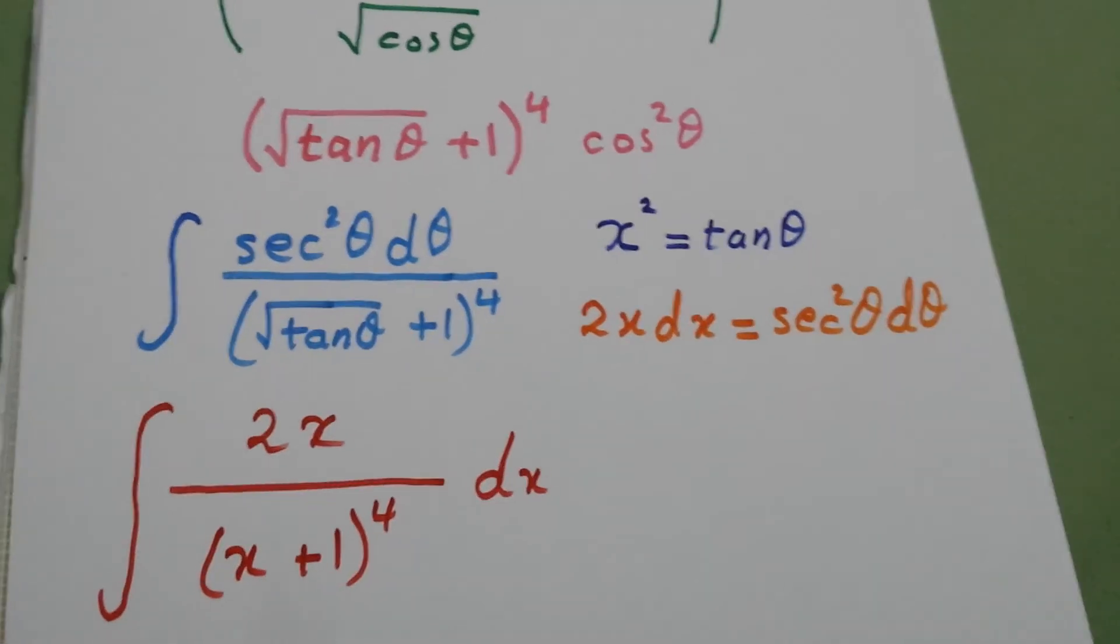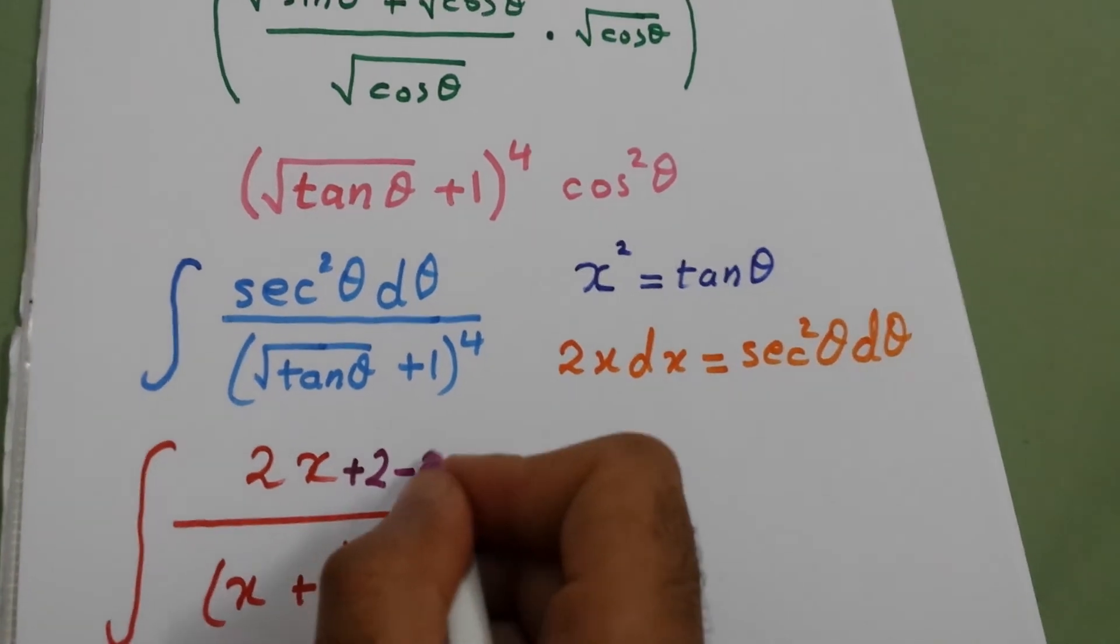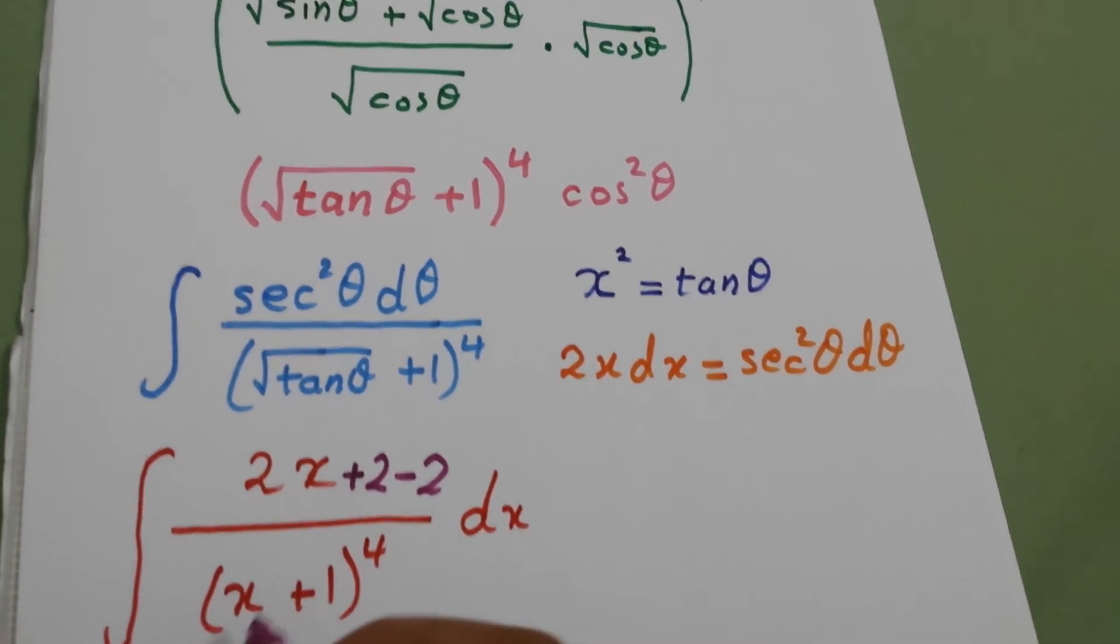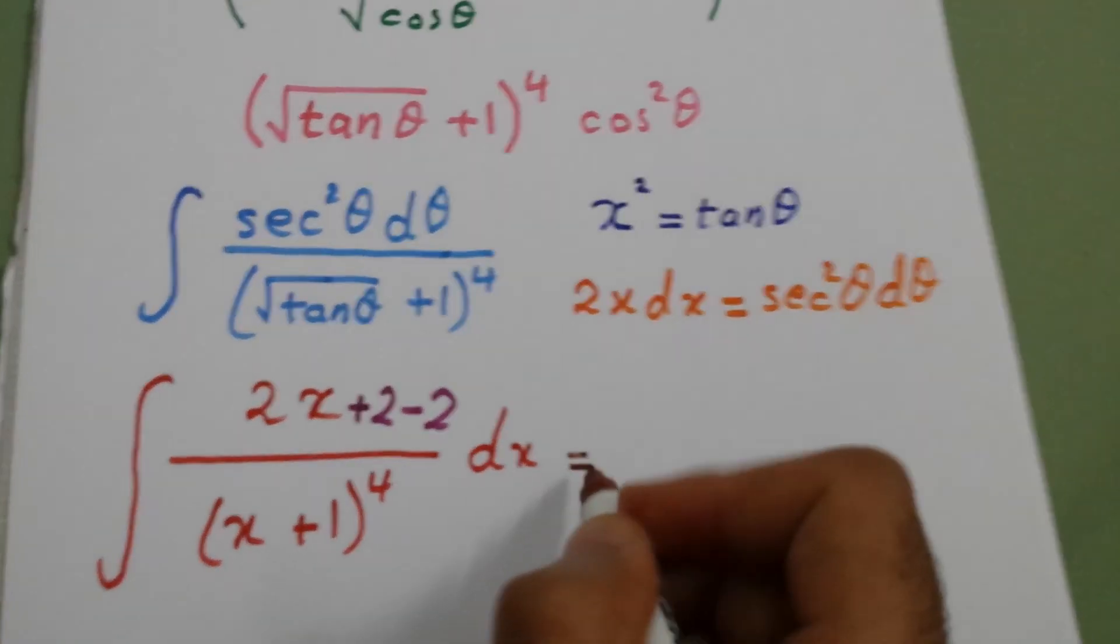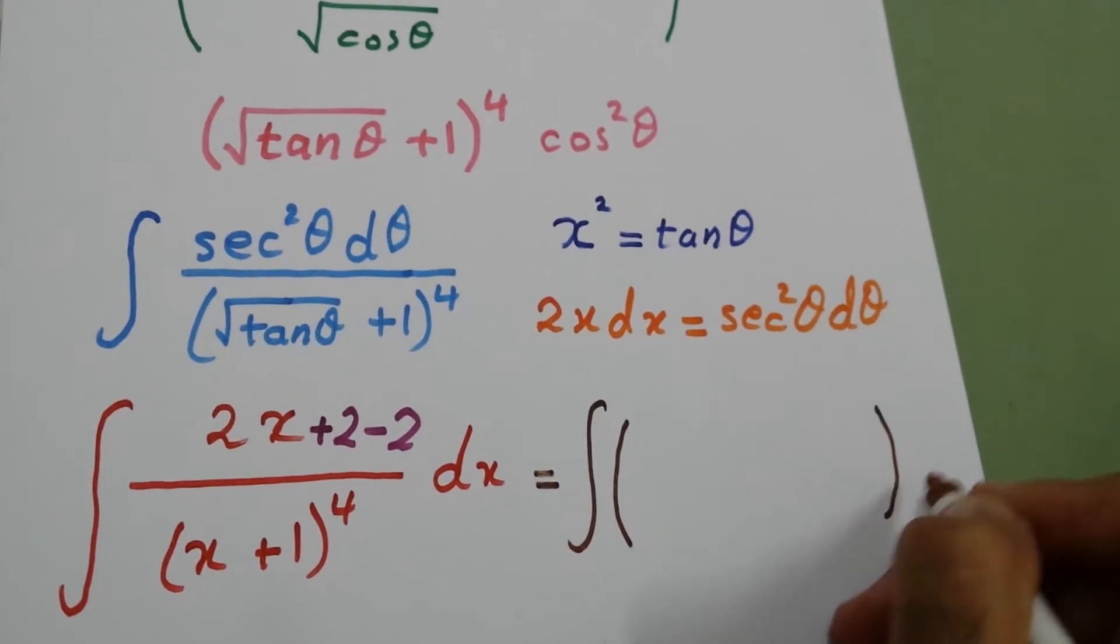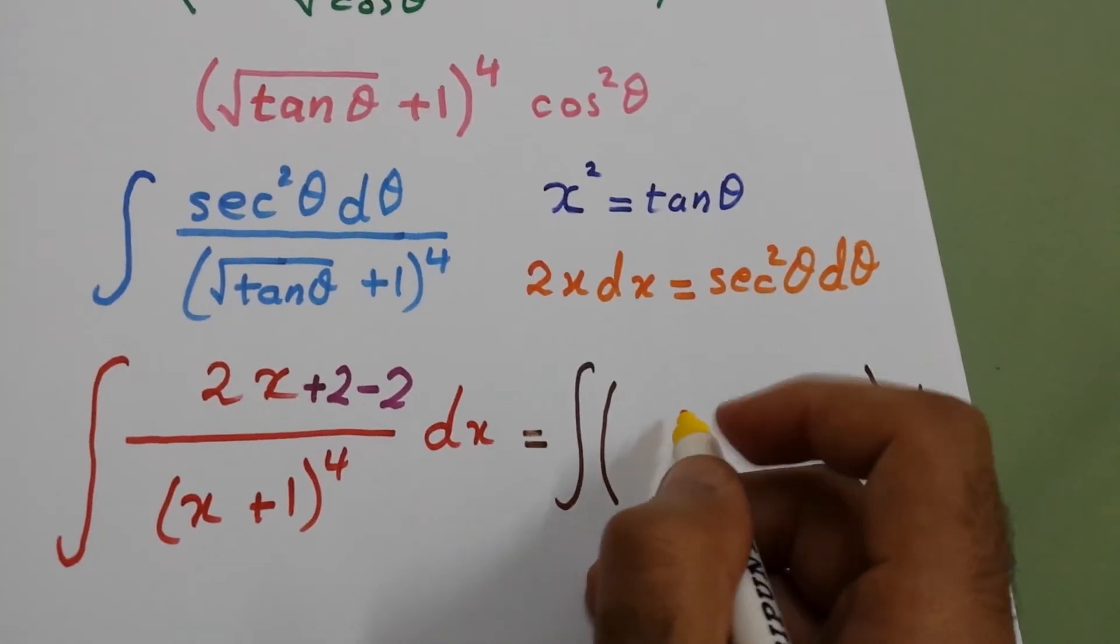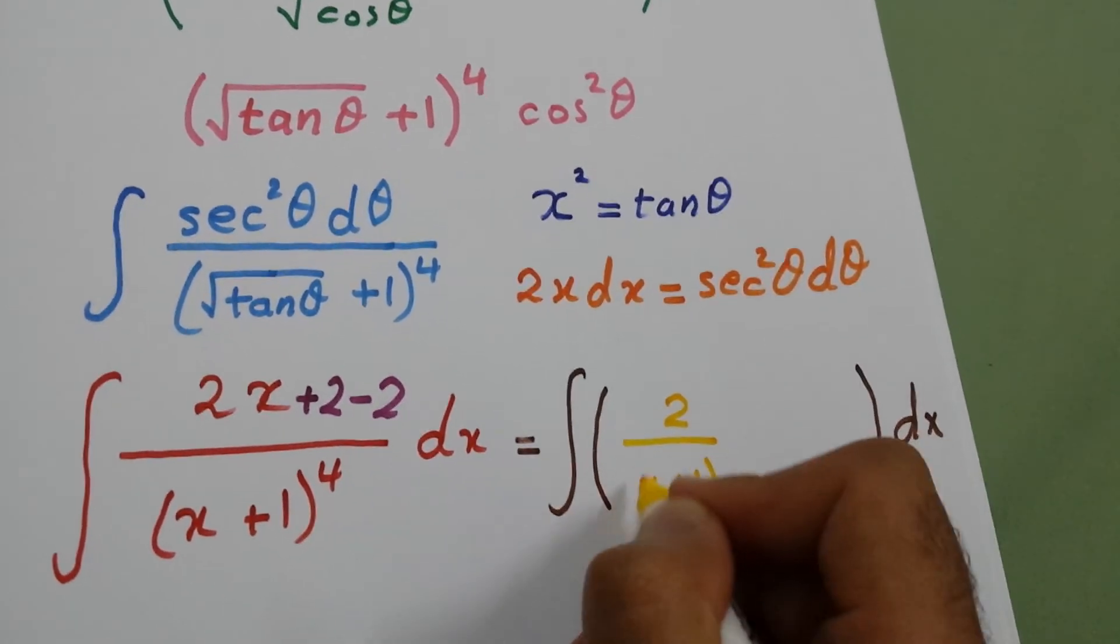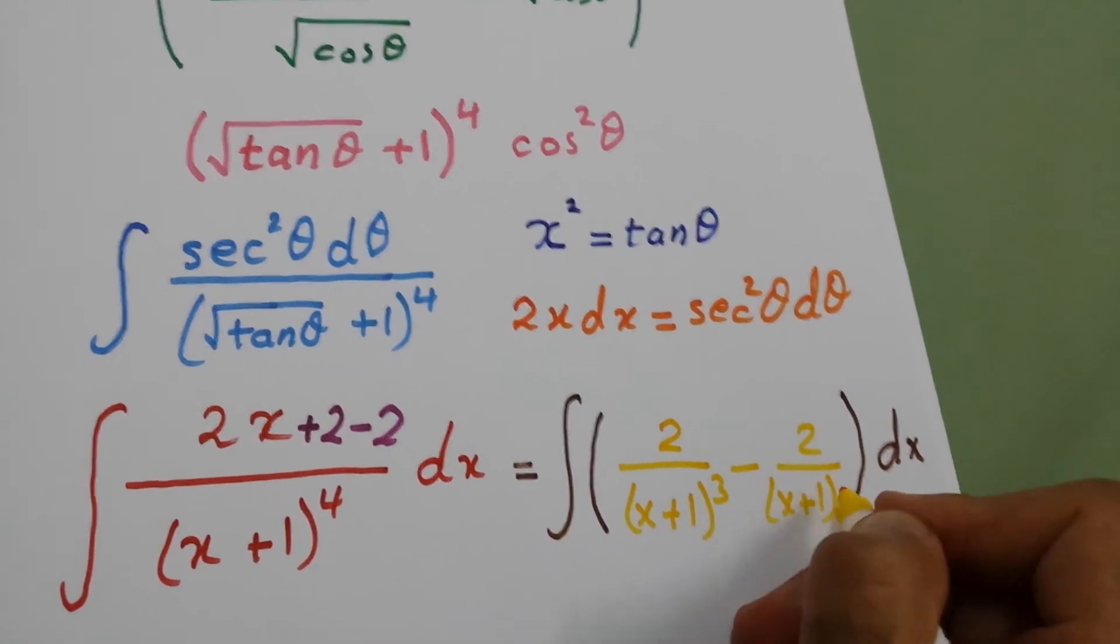Easy integration. Here we will add 2 and subtract 2, and take the first two terms and divide by the denominator. So it will be integral of 2 over x plus one to power three minus 2 over x plus one to power four dx.